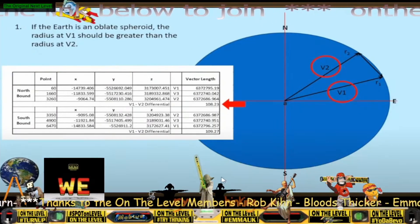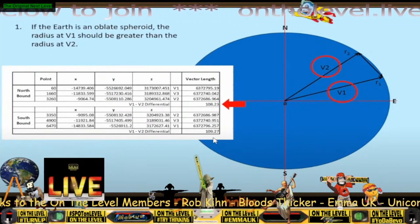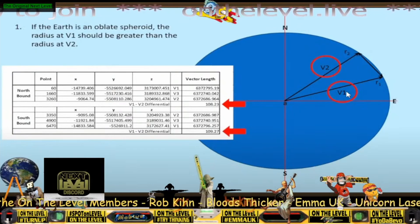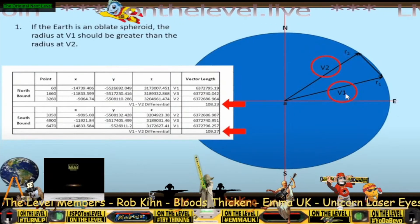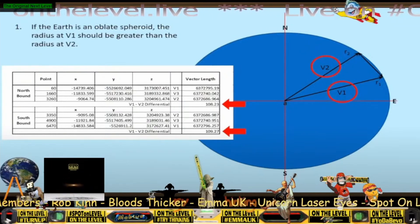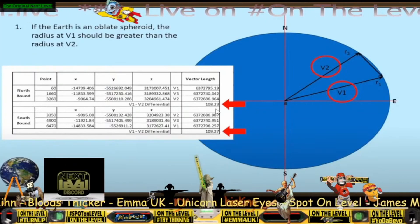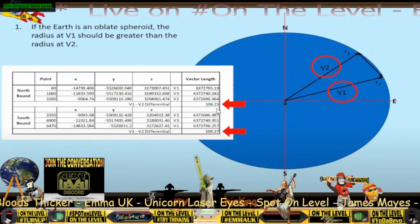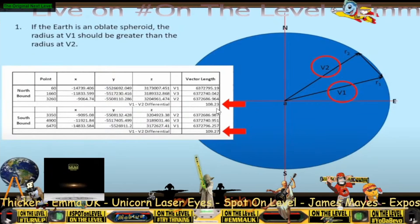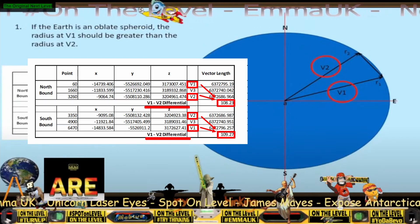On the northbound side I got a difference of 108 meters from the north to the south, and on the southbound lane I got 109 meters. Again, the distance that I was measuring over... 109 meters where? What? Why is it only 109 meters? What's going on? V1 minus V2, right there.